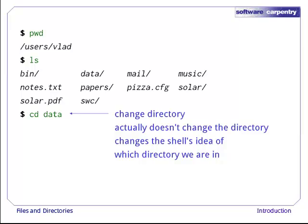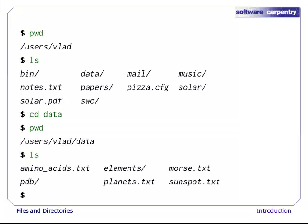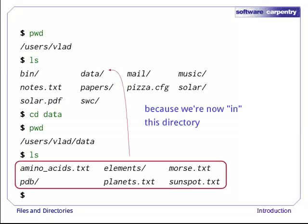cd doesn't print anything, but if we run pwd after it, we can see that we are now in Users/Vlad/data. If we run ls without arguments now, it lists the contents of Users/Vlad/data, because that's where we are now.